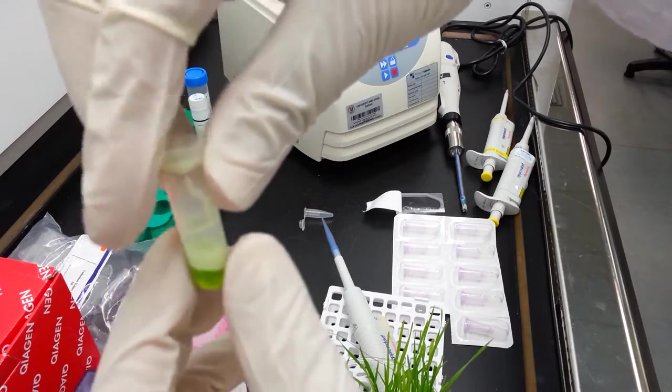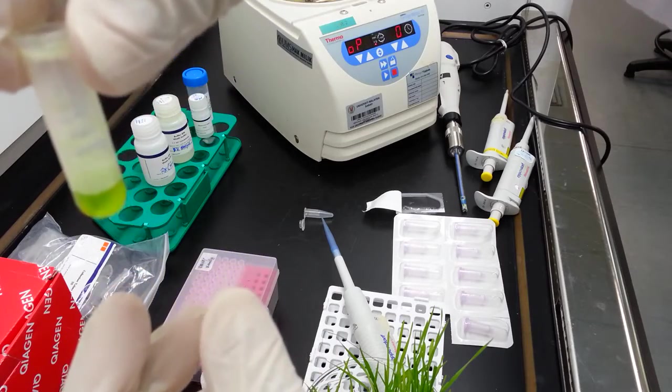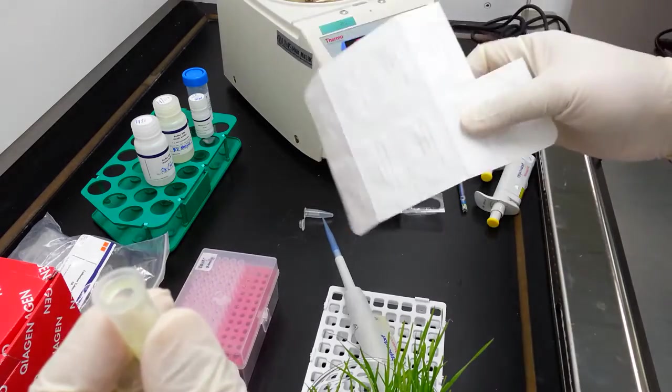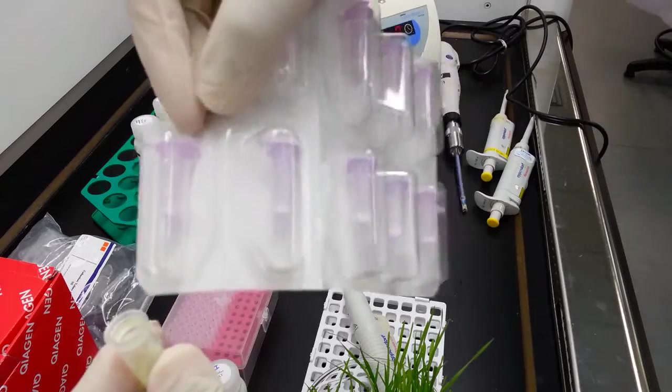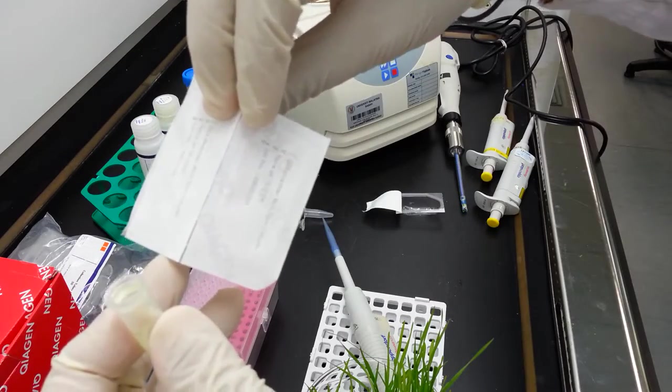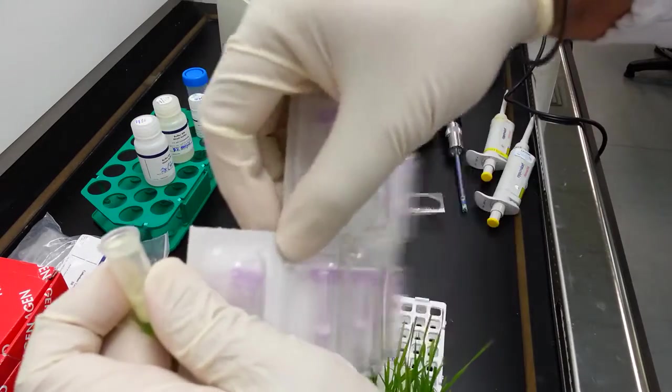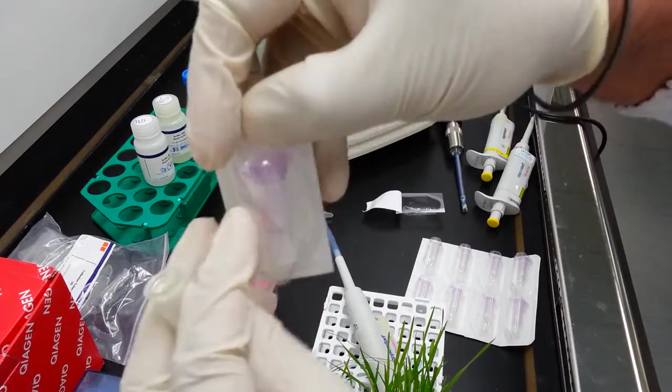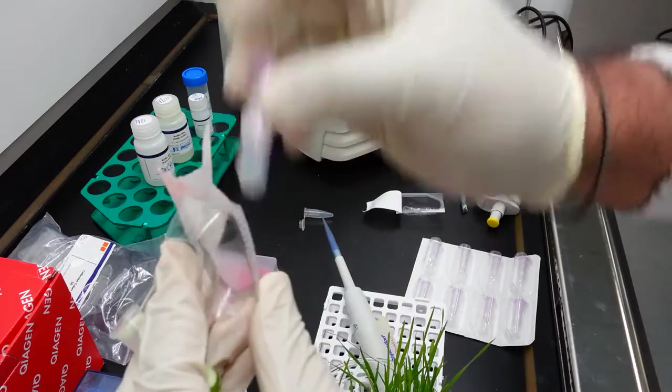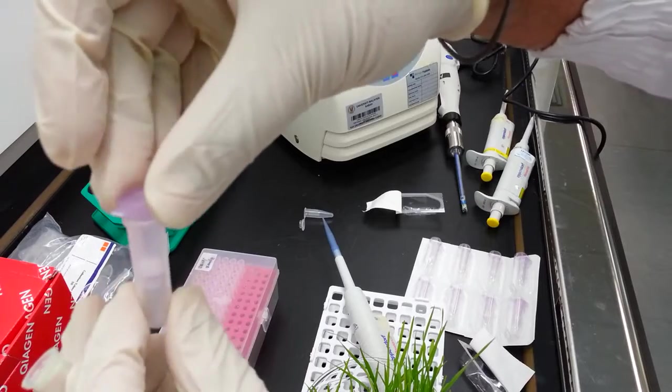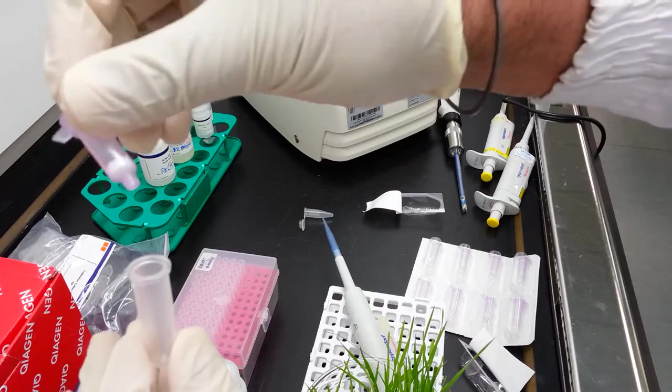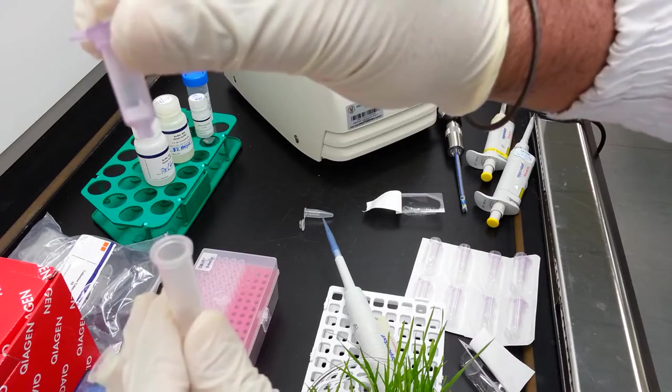This now represents the lysate which contains all the nucleic acids including the DNA and RNA. The RNA-Z plant kit comes with this column which is purple in color and this is termed as the Kaya shredder column. The column consists of two sections: the upper section which is purple and contains the cartridge, and the lower section which is essentially a collection tube.